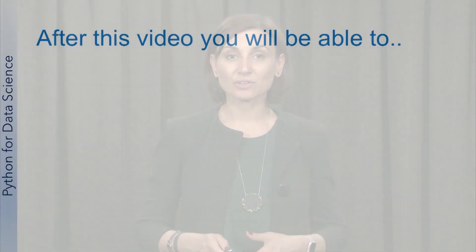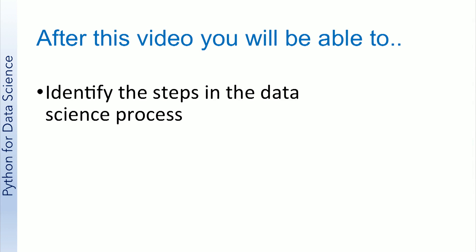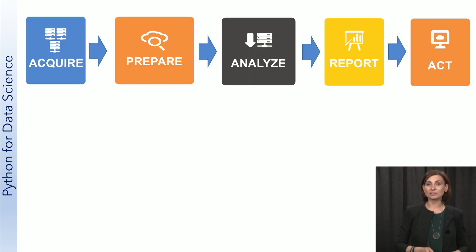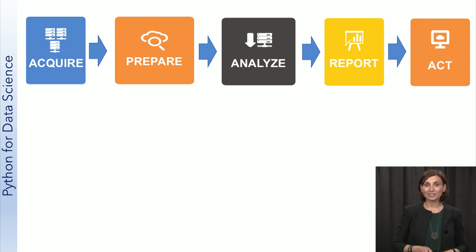Let's now look into the basic steps in the data science process. We will keep applying some or all of these steps in all of the case studies we discuss in this course. After this video, you will be able to identify the steps in the data science process and understand what each step involves. We have already seen a simple linear form of the data science process including five distinct activities that depend on each other. Let's summarize each activity further before we go into the details of each.